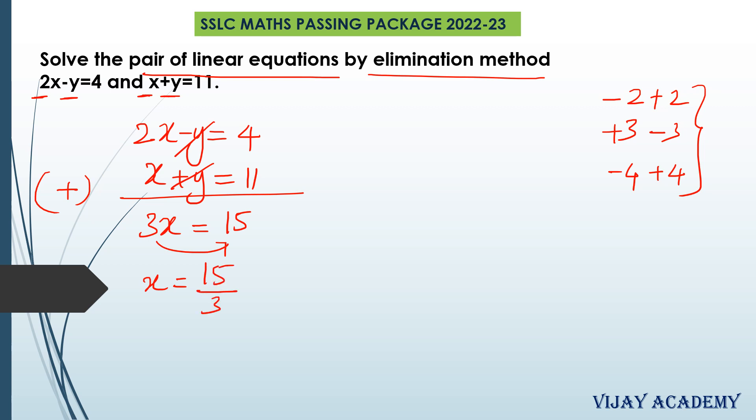Now transpose 3 to RHS and we get x equals to 15 divided by 3. So 3 goes to division because in LHS it is in multiplication with x. So 15 by 3 is 5.